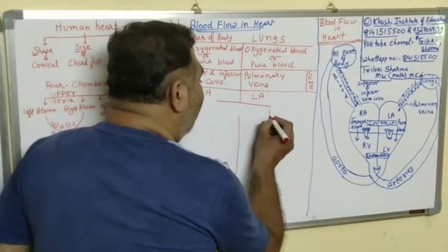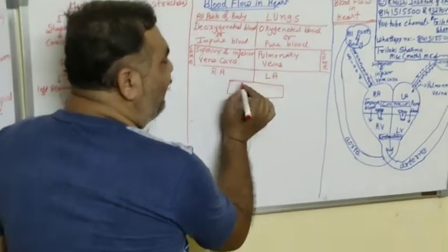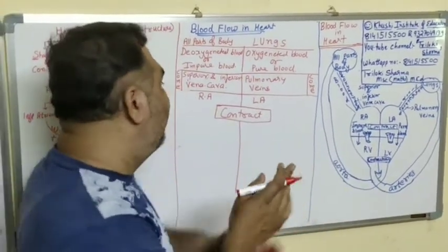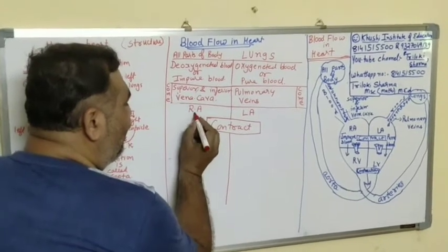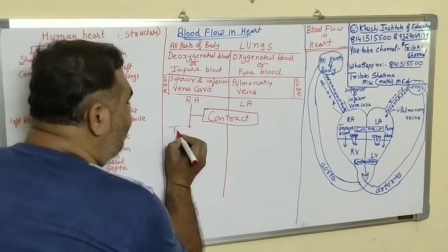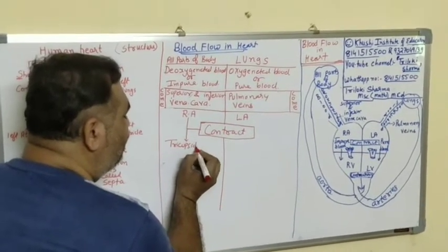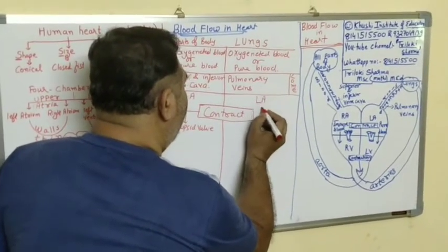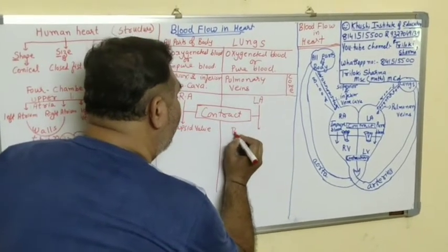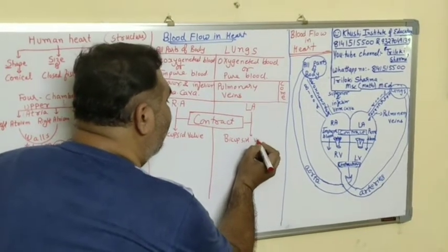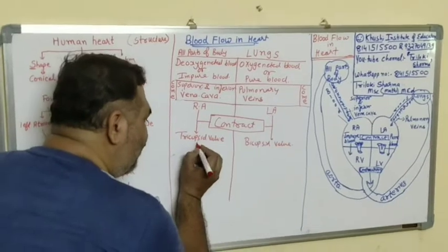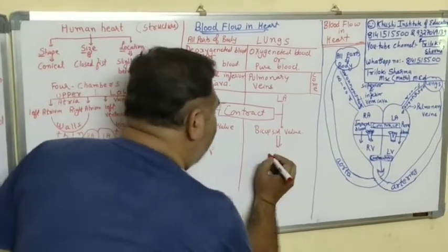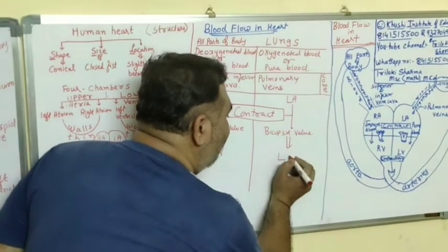The right atrium and left atrium then contract. When the atria contract, blood moves from the right atrium through the tricuspid valve to the right ventricle, and from the left atrium through the bicuspid valve to the left ventricle.